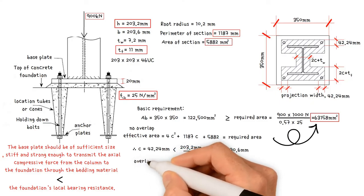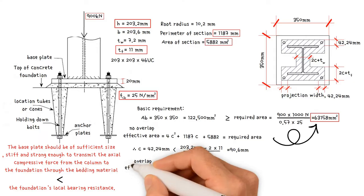However, if there was an overlap, we would recalculate C and the effective area would be as shown.